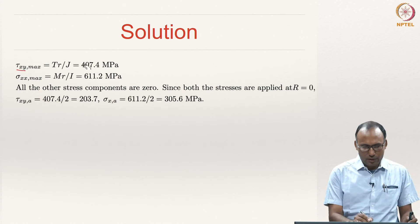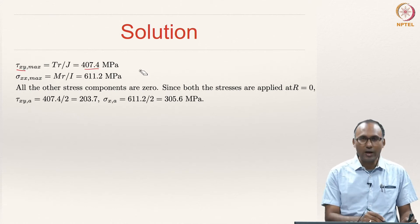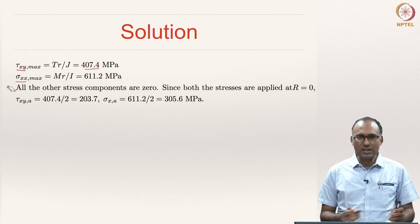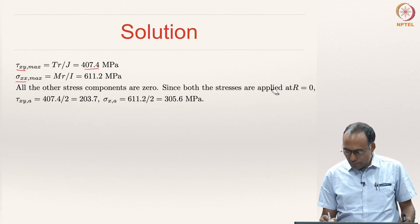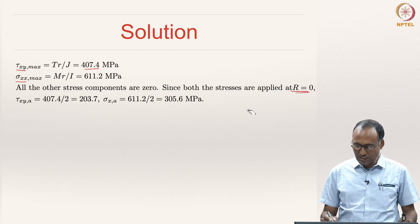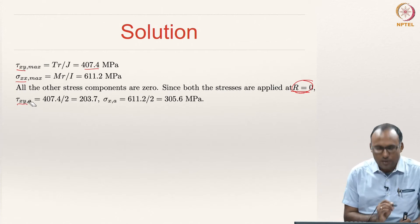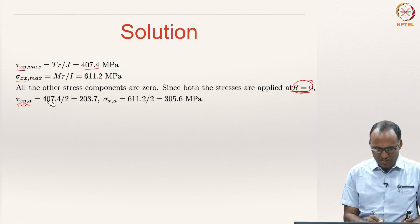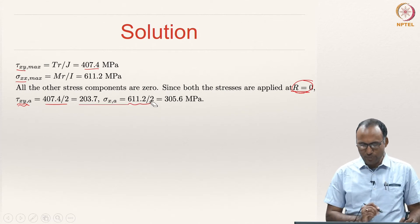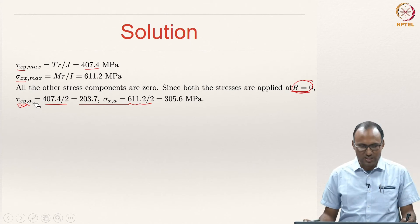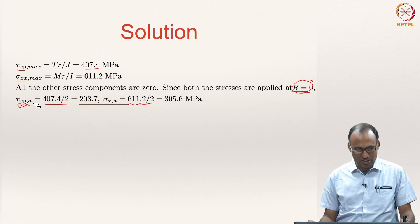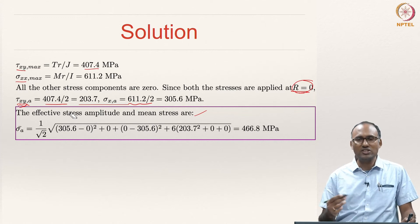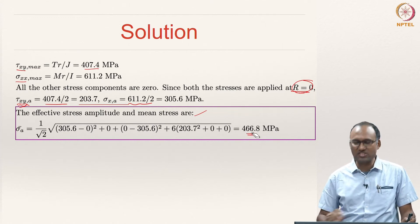You calculate tau xy = 407.4 MPa maximum, since minimum is 0. This is from torsion; the bending gives normal stress, and all other components are zero because these are the only two things acting. Both stresses are applied at R = 0, meaning the stress ratio is 0. Since the stress ratio is 0, stress amplitude equals maximum divided by 2. So shear stress amplitude is 407.4 / 2 and normal stress amplitude is 611.2 / 2. Those are the calculated stress amplitudes for shear stress and normal stress.